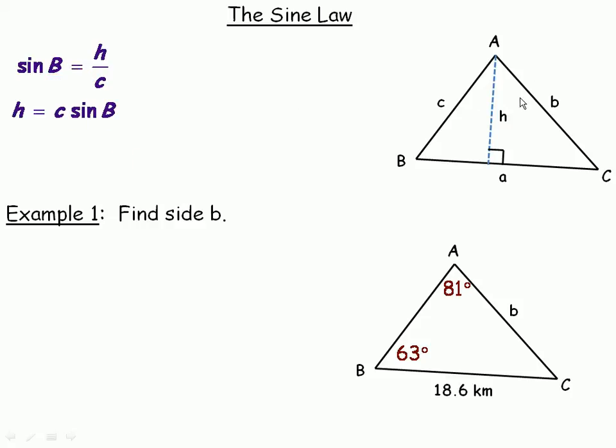Now, in the right triangle on the right here, h is the opposite side for angle C, and b is the hypotenuse. So the sine of angle C is h over b. If we solve for h, just as we did over here, h would equal b times the sine of C.